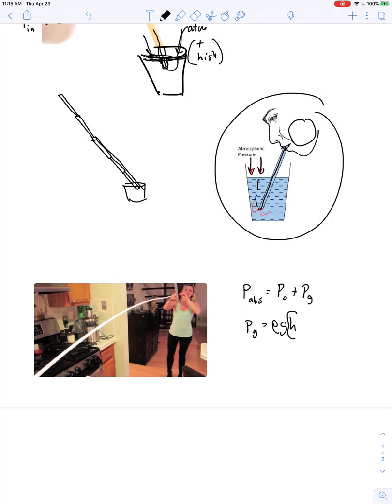Once the height of the straw becomes great enough so that the gauge pressure is an extra atmosphere, then no amount of pushing from the atmosphere here can account for the weight of all the fluid that would be in a straw that's too tall.